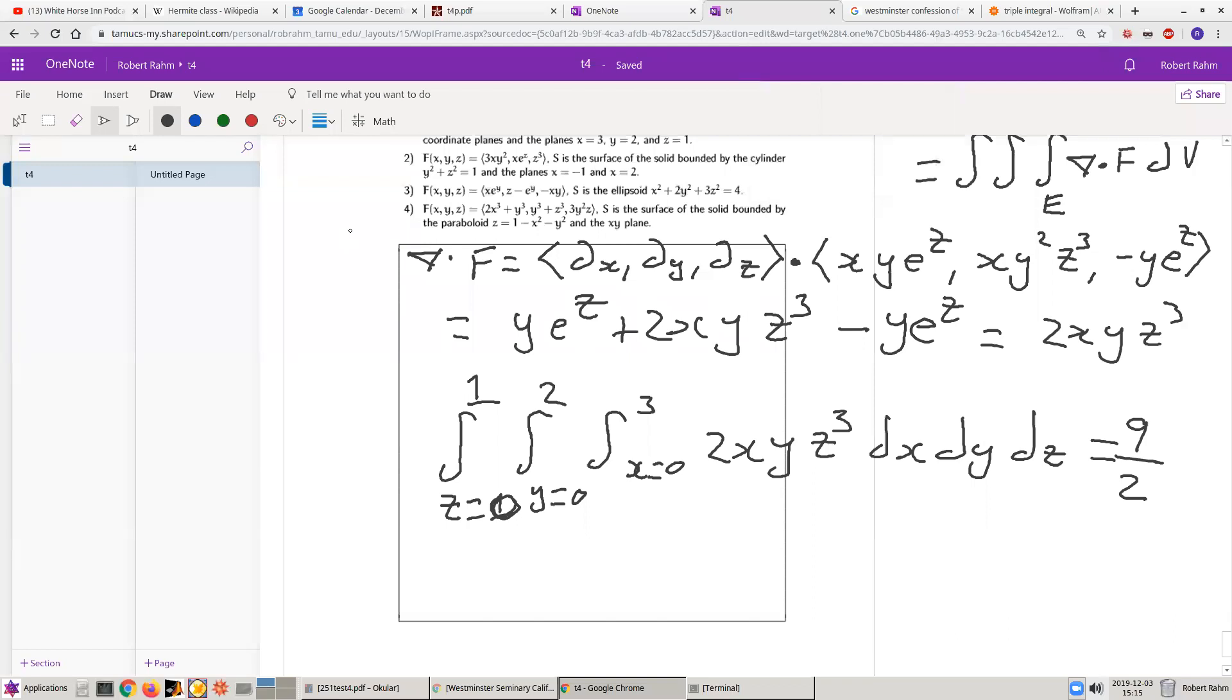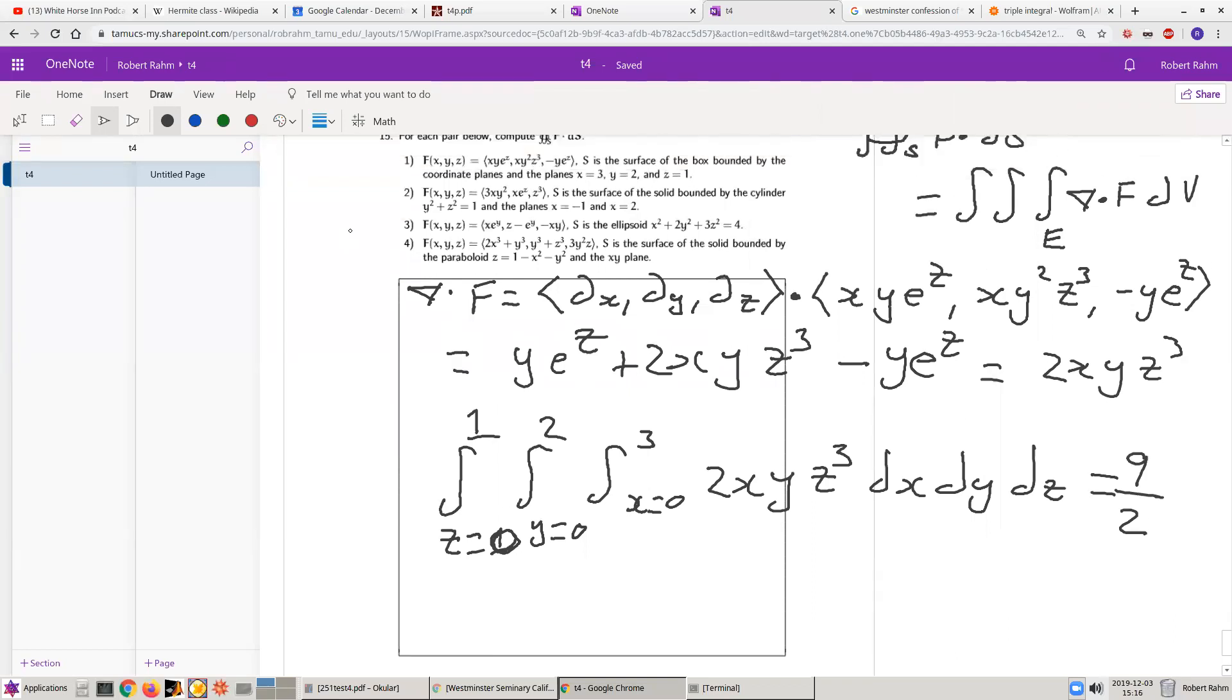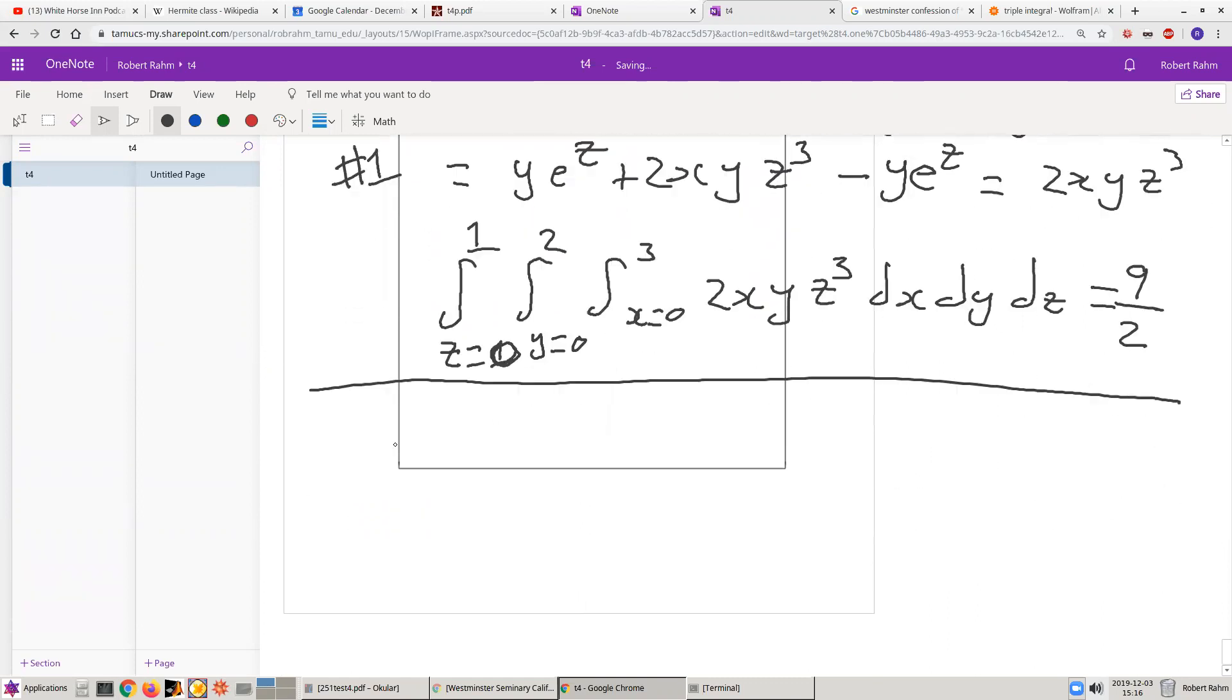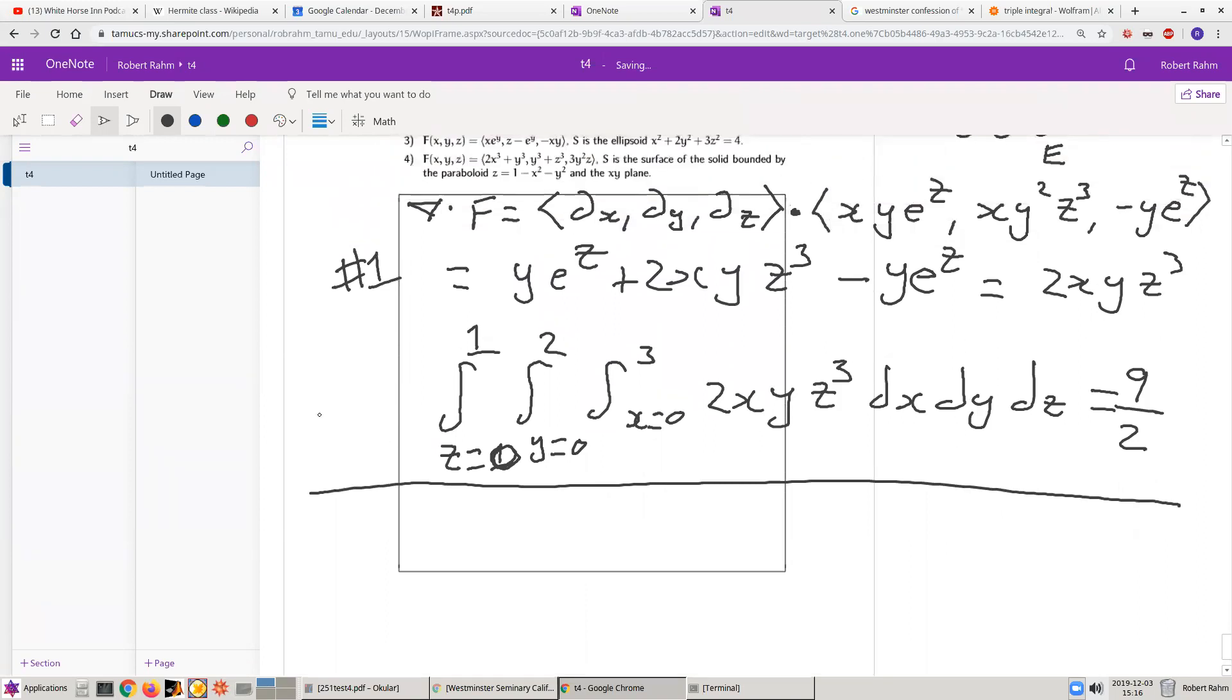Okay, so now let's look at number four. So the first one we did was number one. I think, wasn't this one number one. Yeah, so this is number one. Now I'm going to look at number four. Okay, so again, it's going to be the same thing. So we're going to use the divergence theorem. So the first thing that we need to do is to compute the divergence of the vector field.